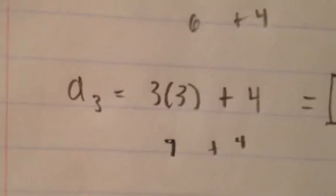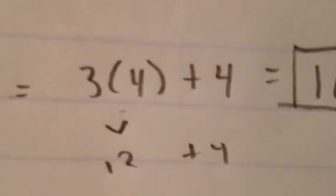a2 would be 3 times 2 plus 4 equals 10. Then a3 would be 3 times 3 plus 4 equals 13. Then 3 times 4 plus 4 equals 16.